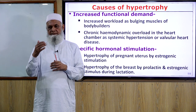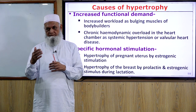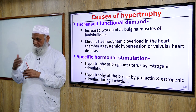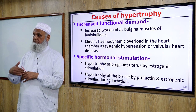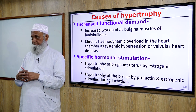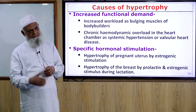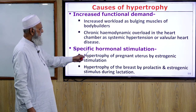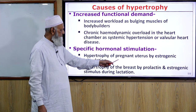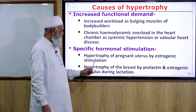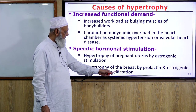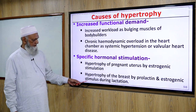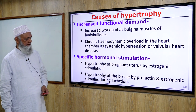In mitral stenosis, left ventricular hypertrophy occurs. In pulmonary stenosis, right ventricular hypertrophy results. Specific hormonal stimulation examples include hypertrophy of the pregnant uterus by estrogenic stimulation and hypertrophy of the breast by prolactin and estrogenic stimulation during lactation.